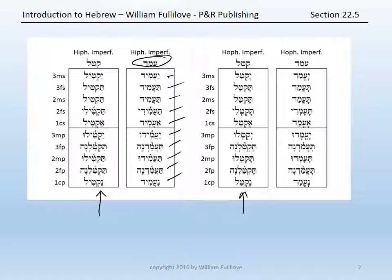The only difference, again, is a compound schwa under the first root letter instead of the typical schwa. The Hophal imperfect of amad: ya-emad, ta-emad, ta-emad, ta-emad, ta-emdi, ha-emad, ya-emdu, ta-emadna, ta-emdu, ta-emadna, na-emad.